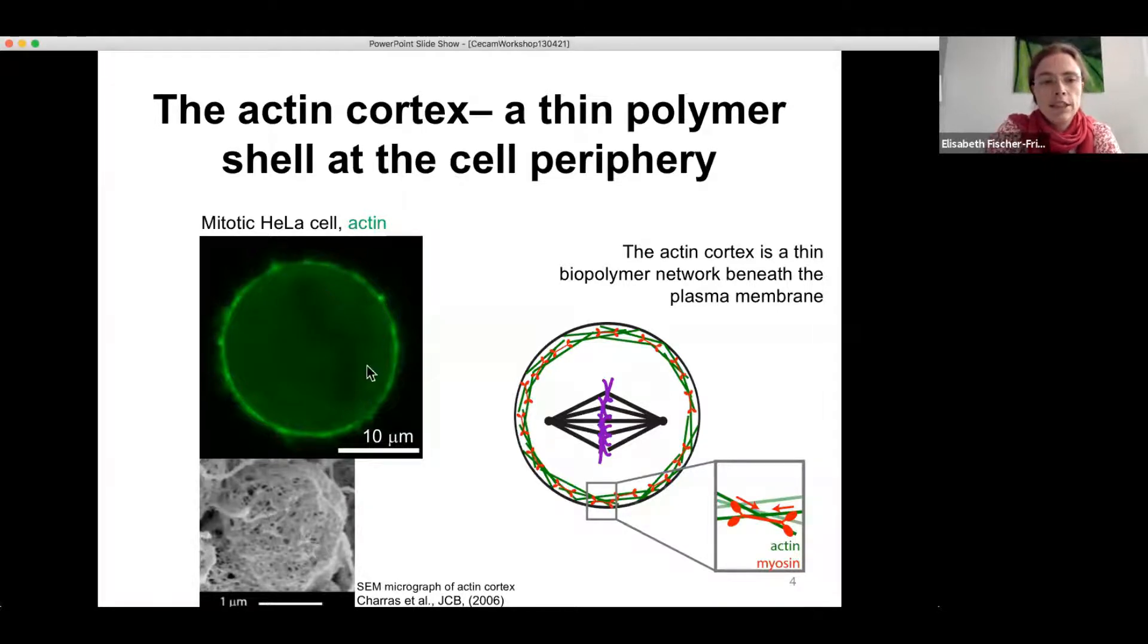And the actin cortex you can see here in green. So this is actually a mitotic cell. It looks similar in non-adherent interface cells. And there we have a polymeric layer made from actin polymers. Actin is a protein in the cell that polymerizes, forms these polymer strands that you can see here in the electron micrograph, which is then tightly interwoven into a network here at the periphery of the cell right underneath the plasma membrane. And there it provides mechanical support to the plasma membrane.